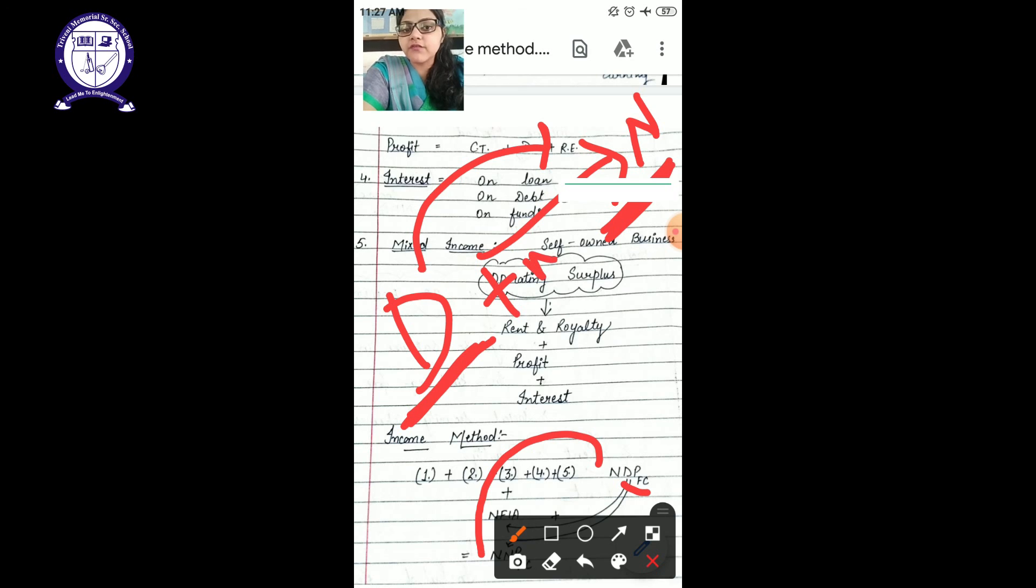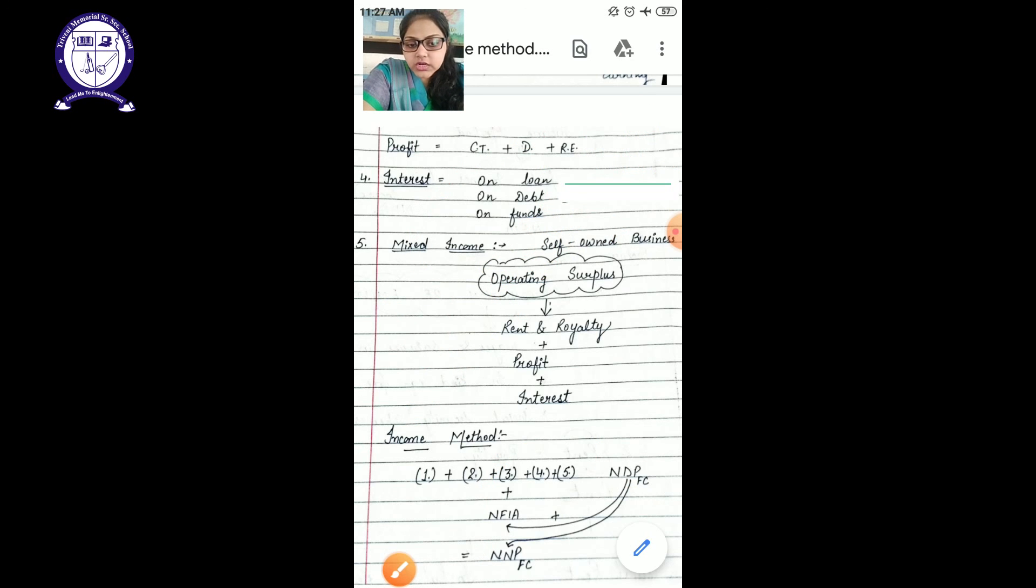When I will add NFIA, this will form N. N will be national income. Second, domestic will change into nation. Product will be the same and FC is same over here also.